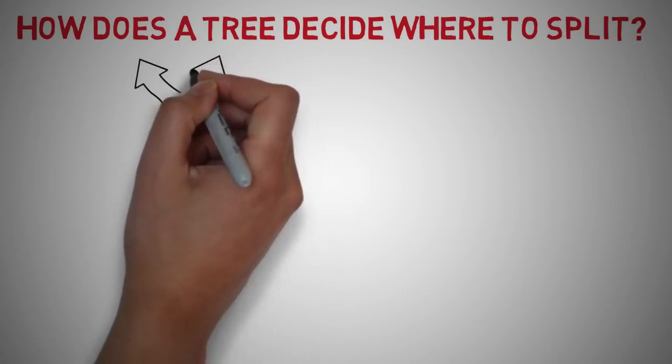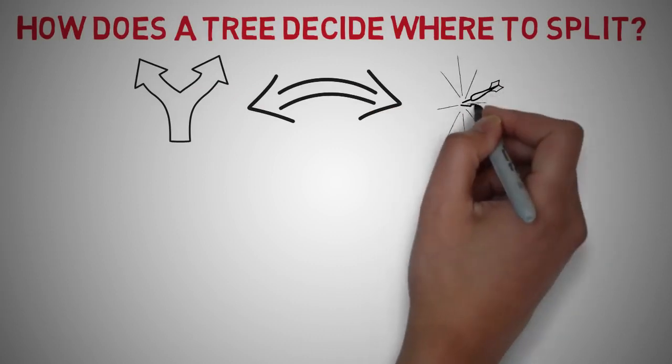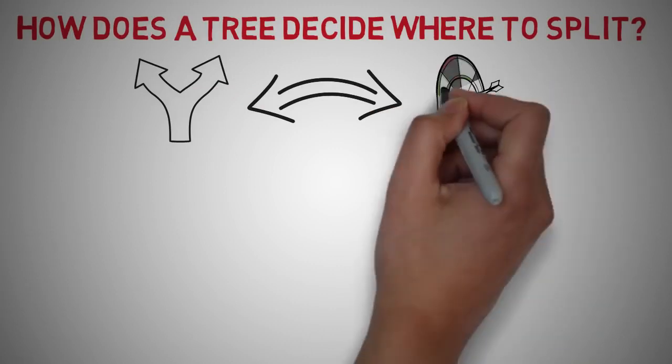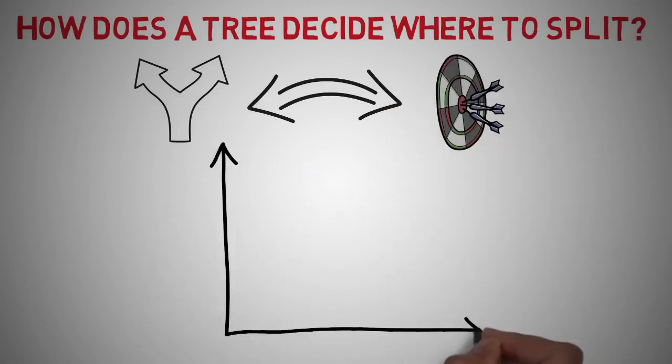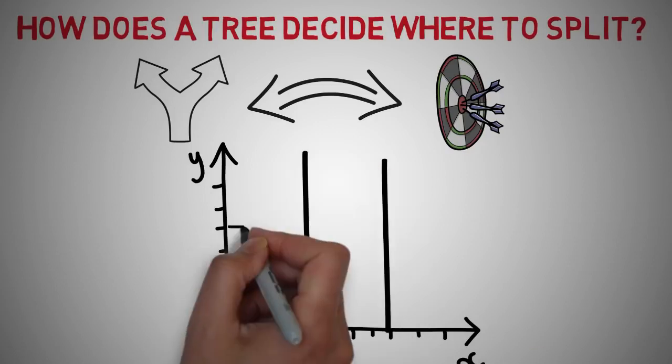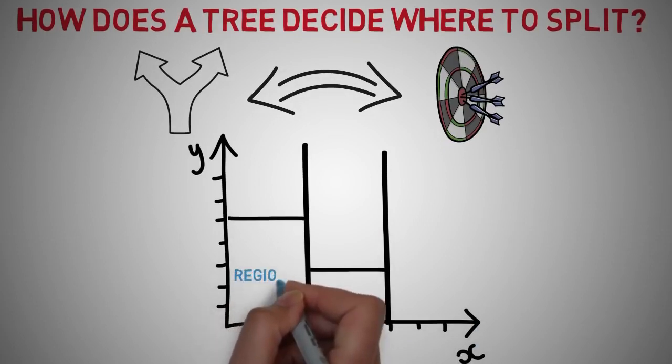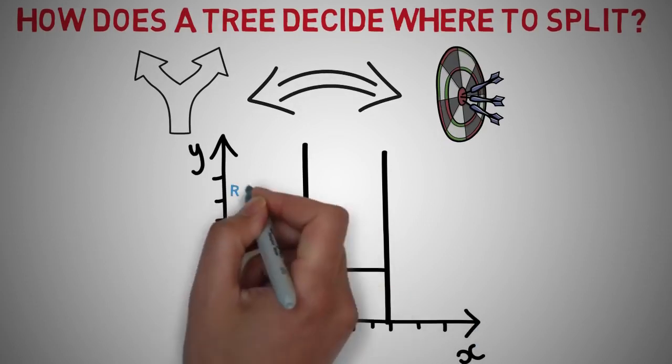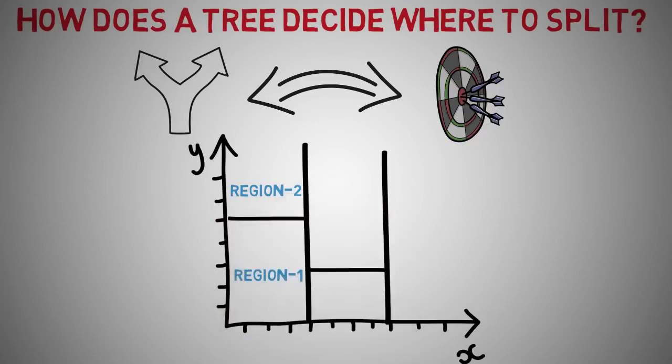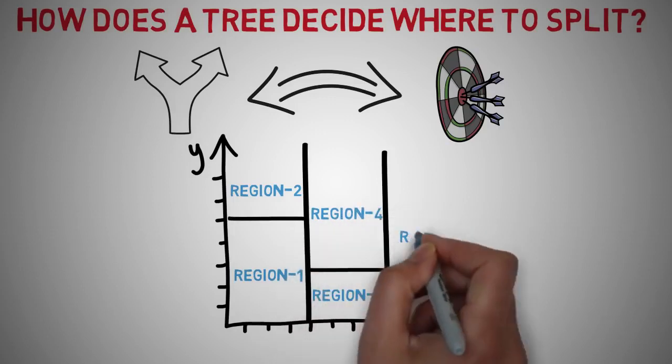How does a tree decide where to split? The decision for making strategic splits heavily affects a tree's accuracy. The decision criteria is different for classification and regression trees. Decision trees use multiple algorithms to decide to split a node in two or more sub-nodes. The creation of sub-nodes increases homogeneity of resultant sub-nodes. In other words, we can group our data in regions based on data that have similar traits.